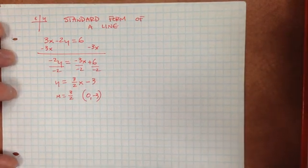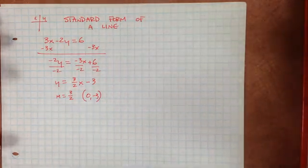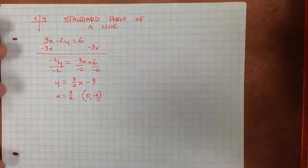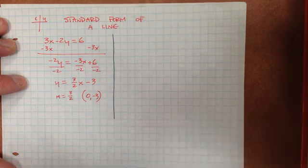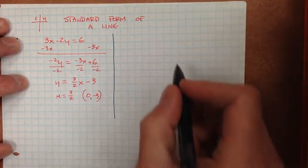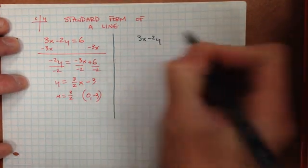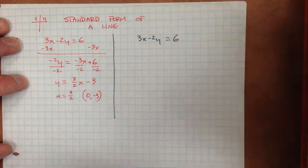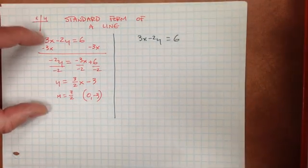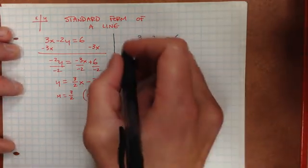That will be enough to graph that. So that is one technique. A secondary technique: you understand that you need two points to graph a line. We can find two points without doing an x-y table, without putting it in slope-intercept form, but instead by finding our intercepts.